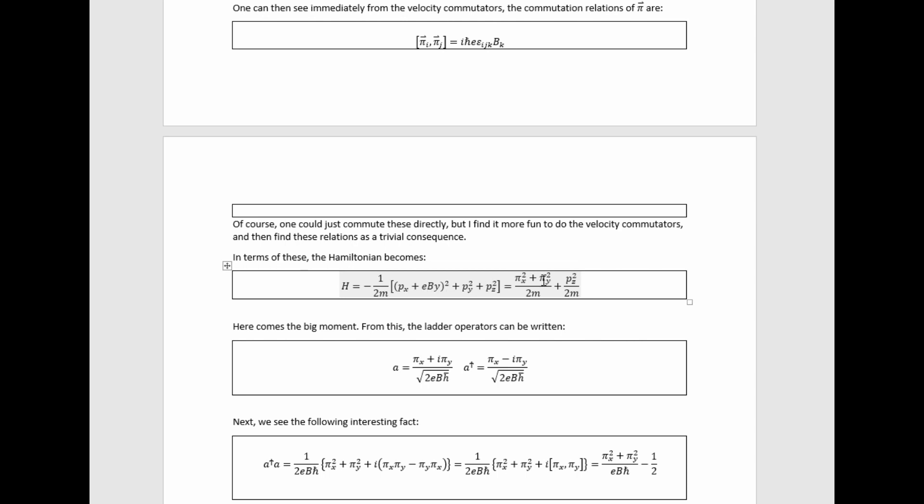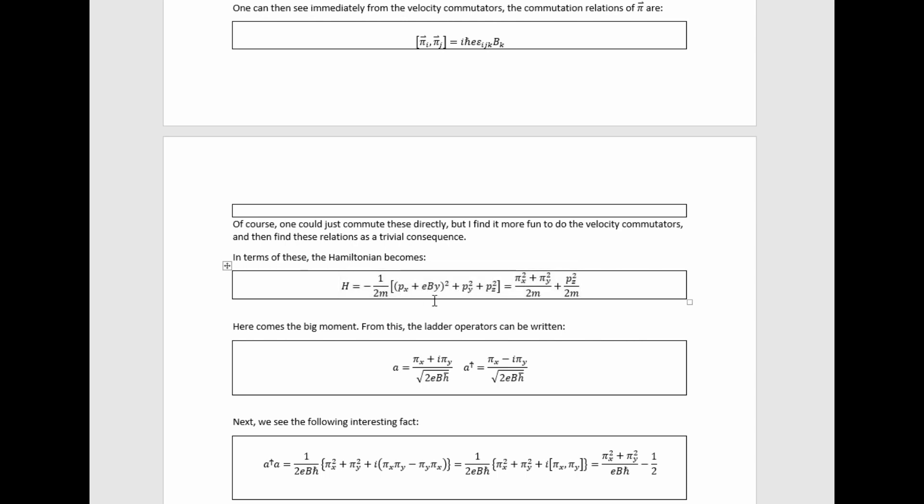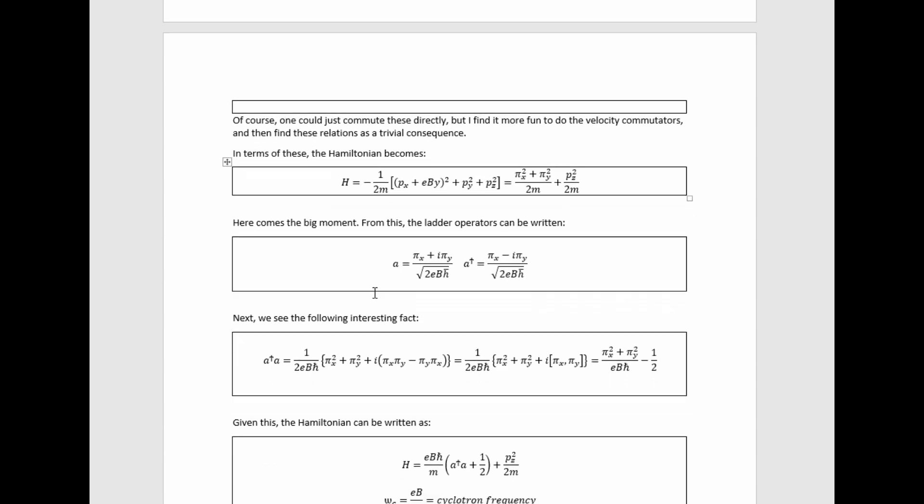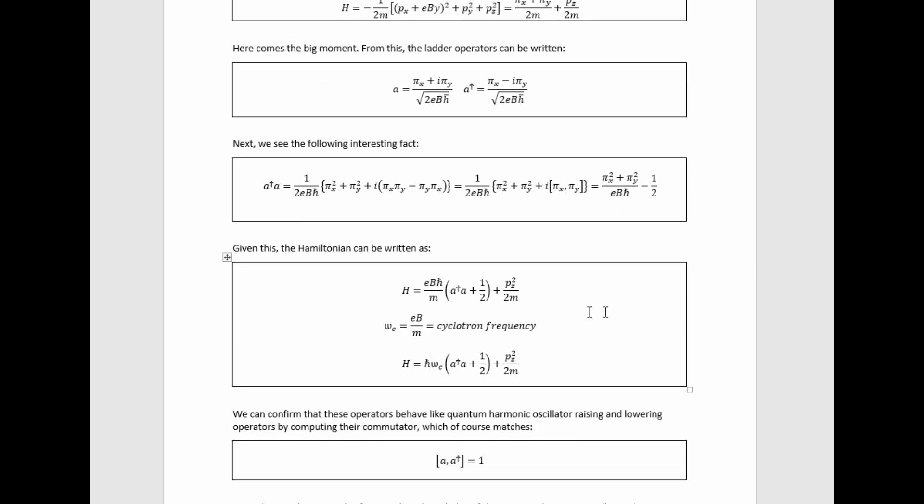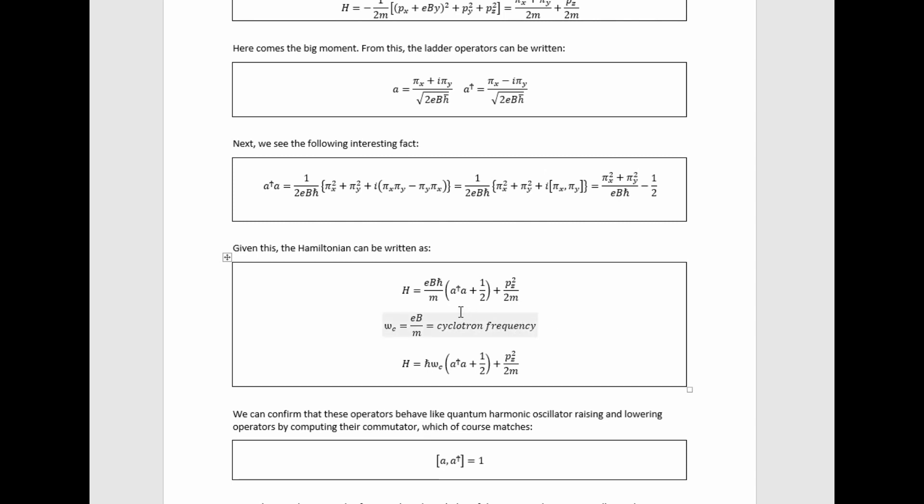In terms of these, the Hamiltonian can be written in this particular way here. Here comes the big moment. From this, the ladder operators can be defined. It might not be obvious immediately that these do behave like ladder operators, but they actually do, in fact, turn out to be. We find that this product of them ends up equaling this, so then we can add a half in order to get the terms in the Hamiltonian that we're trying to rewrite.